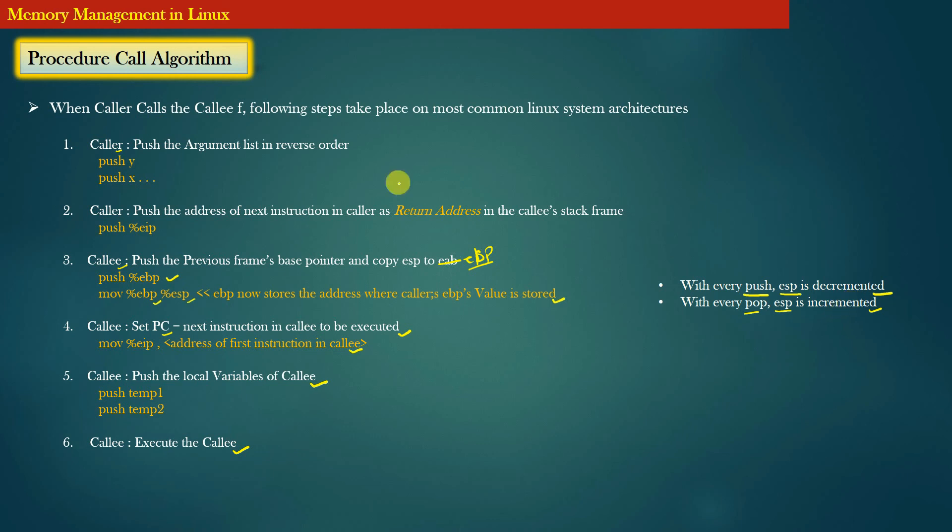So these are the six steps that we have discussed in the procedure call algorithm. You may want to revisit the algorithm and apply these six steps in the same sequence, and this algorithm will be crystal clear in your mind regarding how the stack frame of the callee function is set up before the callee function actually starts its execution.